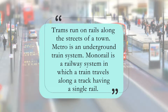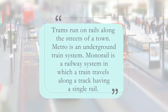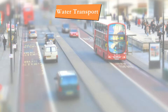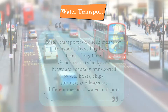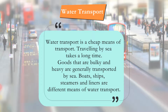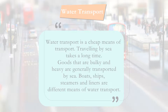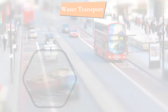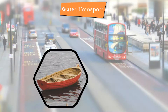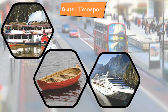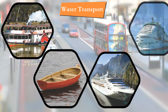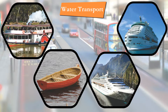Monorail is a railway system in which a train travels along a track having a single rail. Water Transport. Water transport is a cheap means of transport. Traveling by sea takes a long time. Goods that are bulky and heavy are generally transported by sea. Boats, ships, steamers and liners are different means of water transport.